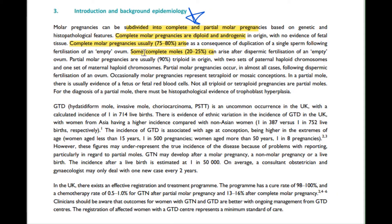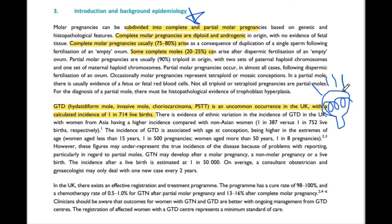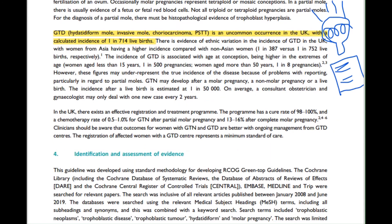In the next paragraph, you can see a number mentioned — occurrence in UK: 1 in 714. Here's an idea: why don't we write down all the numbers in a notebook separately? You can read through it before your exam. The numbers are really important in this examination — occurrence, recurrence, complication rate, and so on.